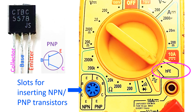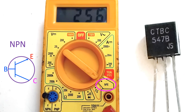Most digital multimeters have an option to check the HFE of transistors. The transistor has to be inserted in the NPN or PNP slots according to the pinout diagram, and the selector knob turned to the HFE option to read the value on the digital display.